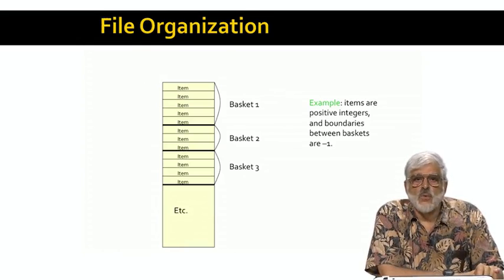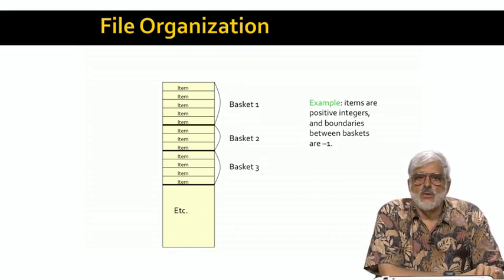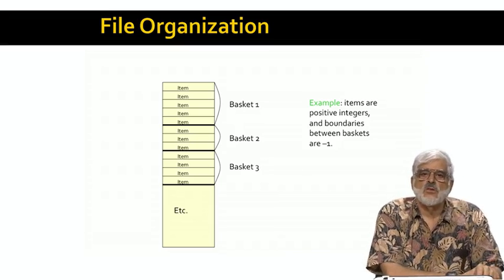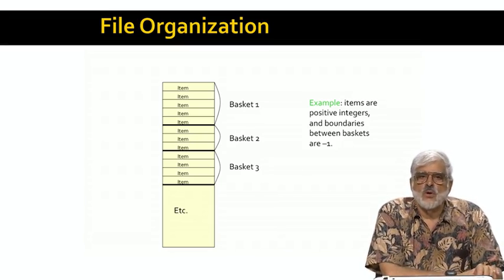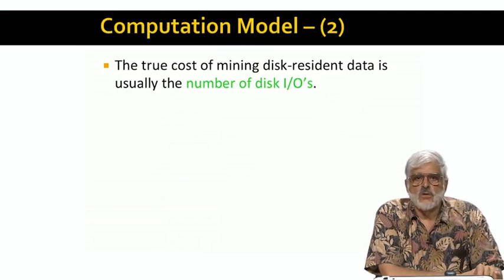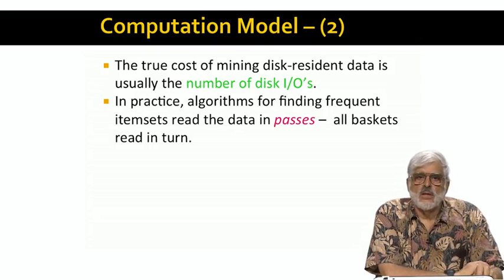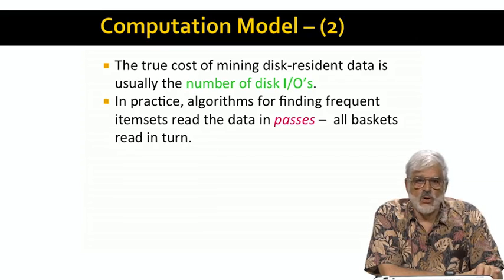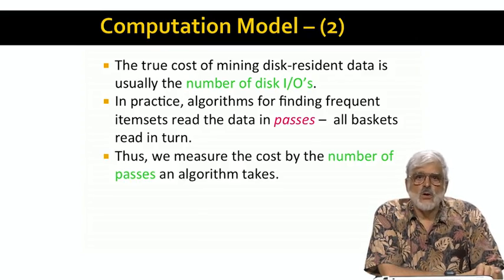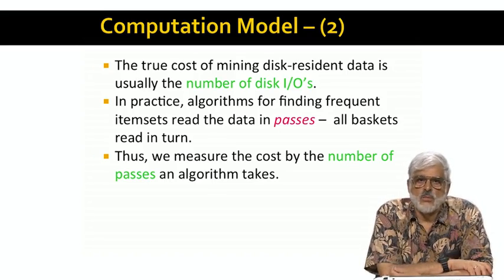However, you should be alert to the possibility that if you were asked to generate all subsets of size 100,000 from a basket with a million items, you just couldn't do it. So here's a picture of what we imagine the file looks like. Items have been coded as integers, so the file is a sequence of integers. We need a way to indicate where one basket ends and the next begins. So we might use an integer like minus one, which we suppose can't represent an item, as the separator for baskets. As we mentioned, we can focus on the number of times a disk block is moved between disk and main memory. It turns out that the algorithms we will study each operate in passes. During a pass, the entire file is read block by block in order. A surrogate for the cost of the algorithm is thus the number of passes. The number of disk IOs is that number, number of passes, times the number of blocks that the file of the basket occupies.